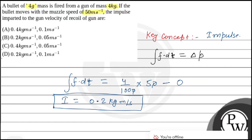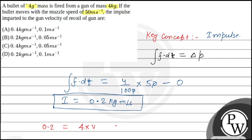Now, when the gun receives this impulse, it will start to move. To find how fast the gun moves, we use the impulse of 0.2 kg·m/s, which equals the change in momentum of the gun. Let the velocity of the gun be v, so: impulse = 4 × v, which gives v = 0.05 meter per second.